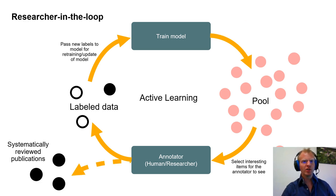We propose a solution in which the cycle is not optimized for training an accurate model, but where the process is optimized such that the primary output is a minimum selection of the data. All relevant data points should have been seen by a human, and all items should systematically be screened with identical criteria.